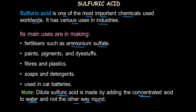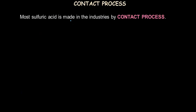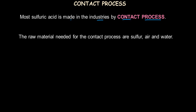Most of the sulfuric acid worldwide is made by an industrial process named the contact process. This is a worldwide process carried out on a very large scale. The raw materials needed for the contact process are sulfur, air, and water — no other raw materials are needed.